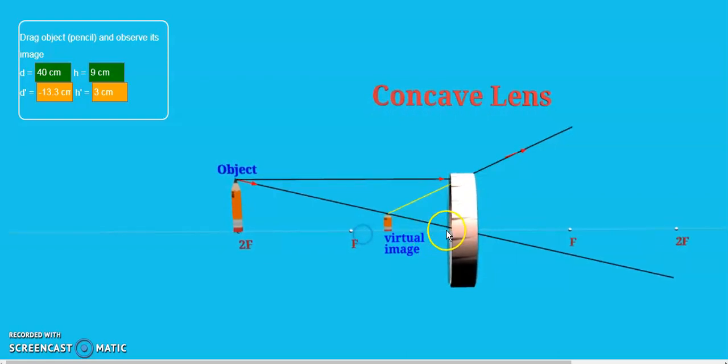So again, that is a bi-concave lens, where you have two focuses, one is 1F and the double of that one is 2F.